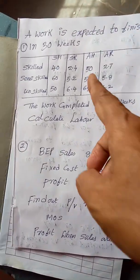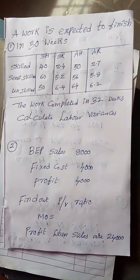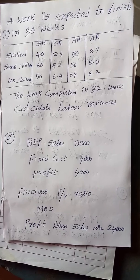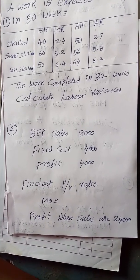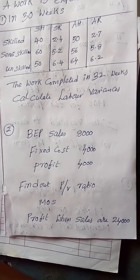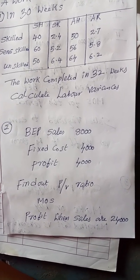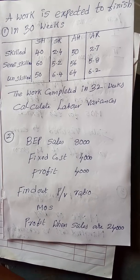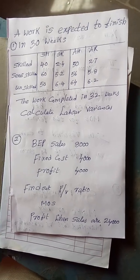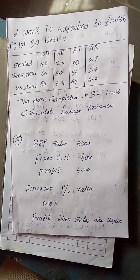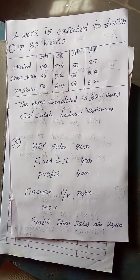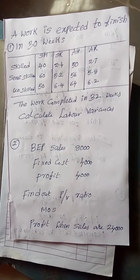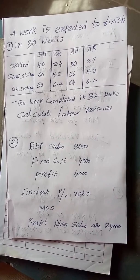This problem is known to you, I think — it's a familiar problem in your reader. Margin of safety, you also know. Profit by PV ratio equals actual sales minus break-even sales. Wishing you all the best, my dear students.